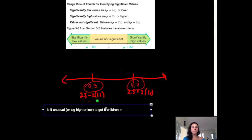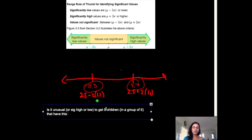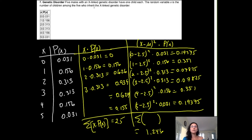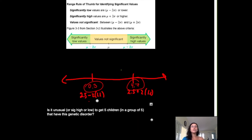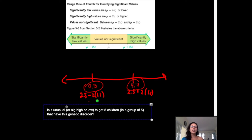The question is: is it unusual or significantly high or low to get five children in a group of five that have this genetic disorder? Remember, the probability distribution we went through represents, in a group of five, the number of children that have this genetic disorder from their fathers — so either zero, one, two, and so on. Is it unusual to get all five?